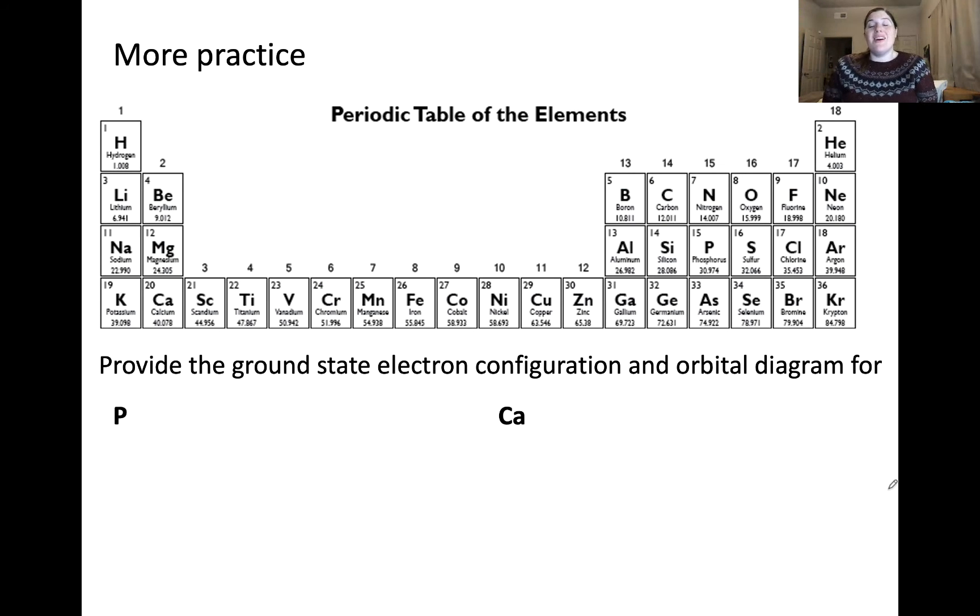All right, now it's your turn. Pause the video and try to write the electron configuration and draw the orbital diagram for phosphorus and calcium. Try it on your own and then unpause when you think you've got it.